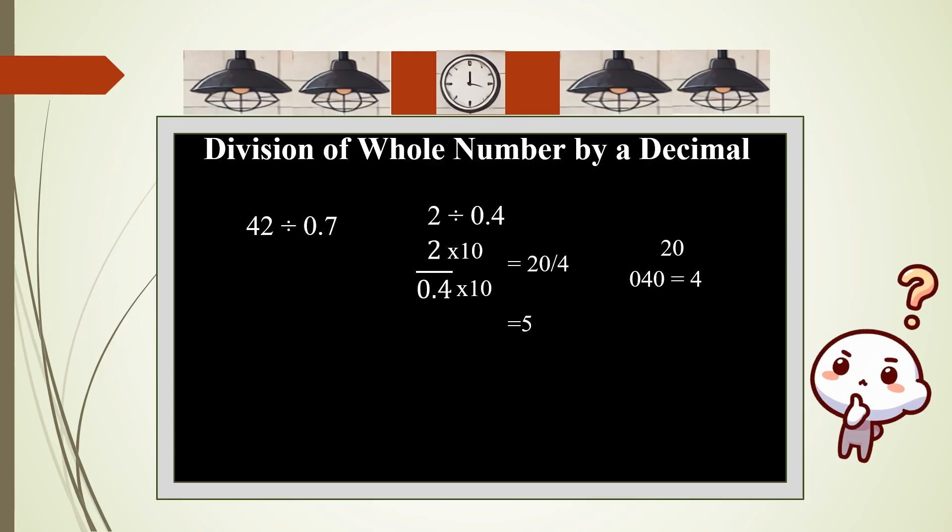We will take another example using the long division method: 42 divided by 0.7. Write it as usual. Since there is a decimal in the divisor, you have to remove that decimal. Since it is only one place, you multiply by 10 the divisor as well as the dividend. 0.7 will become 7 and 42 will become 420. 7 will go in 42 six times. Multiply: 7 times 6. Subtract. There is one 0 here, so bring down that 0. 7 will go in 0 zero times, so you write 0 in the quotient. Therefore, the answer is 60. 42 divided by 0.7 equals 60.